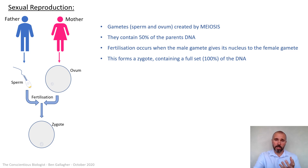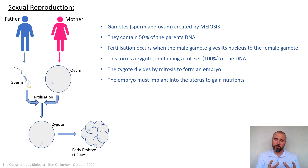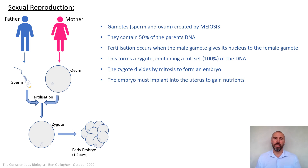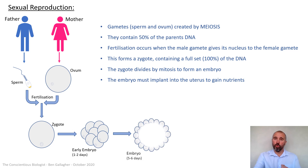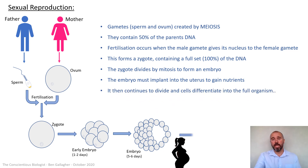The zygote, now in the fallopian tubes or oviducts of the woman, is going to start to multiply to become an early embryo. The early multiplication is based on the nutrients already inside the ovum. After this point they need to rely on an external nutrient source, so they need to implant into the wall of the uterus into the endometrium, which is made of capillaries that will give them nutrients from the mother's blood to multiply and differentiate into a recognizable organism — a baby.